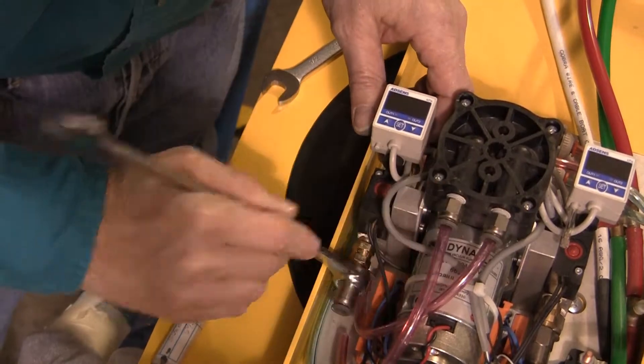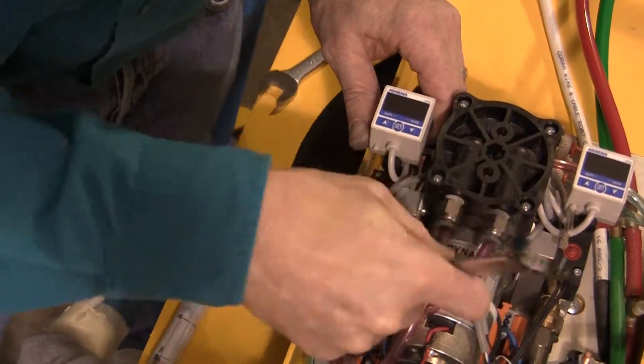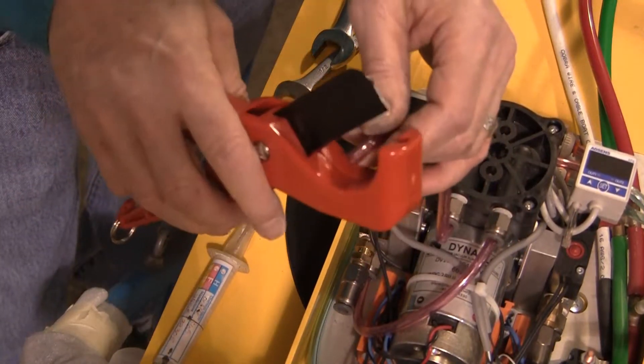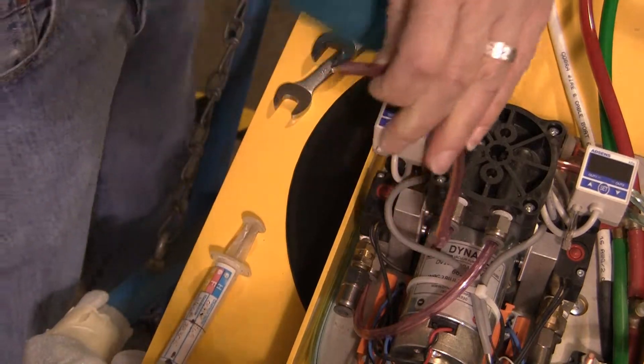Do not over tighten the fittings, since the thread sealant will create a tight seal. Trim a small portion off the end of the hose to ensure a good connection, then reconnect the hose to the hose fitting.